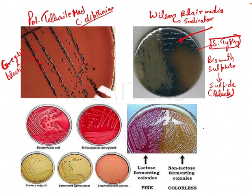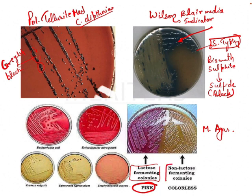Then comes McConkey agar. In this, a lot of bacteria generally grow. You can grow lactose-fermenting colonies, and if the lactose-fermenting colonies are grown, they will appear pink. Those which are not able to ferment the lactose will appear colorless. So E. coli and Enterobacter aerogenes ferment lactose, while Proteus vulgaris and Salmonella typhi do not ferment lactose. All these different culture media are considered gold standards for identifying bacteria.